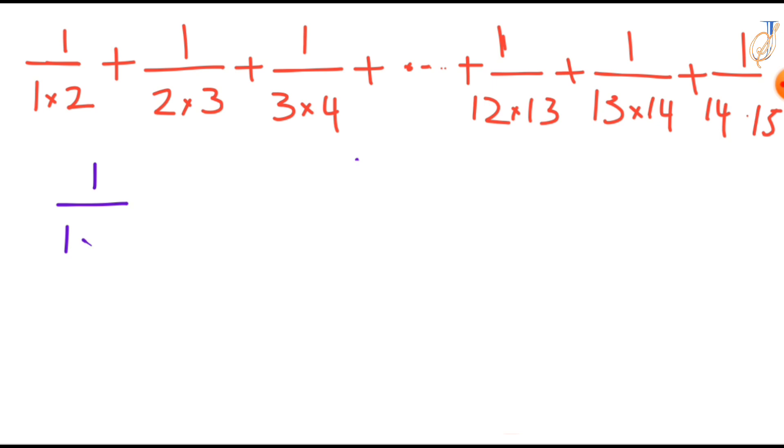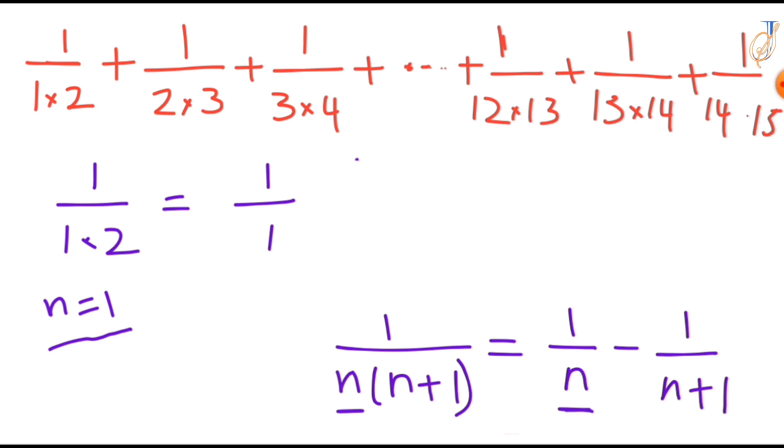So this 1 over 1 times 2 is in the form of 1 over n times n plus 1. So we can write this as 1 over n minus 1 over n plus 1. So if we write this, here n value is 1. So that's why 1 over n value is 1, so write 1 minus. So now write this step 1 over 1 plus 1 that is 2. So 1 over 1 times 2 we can write it as 1 over 1 minus 1 over 2.